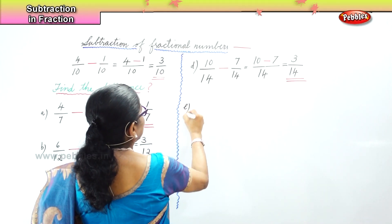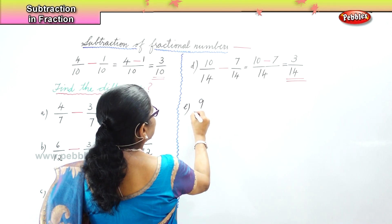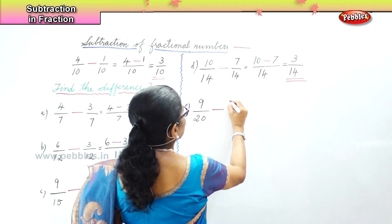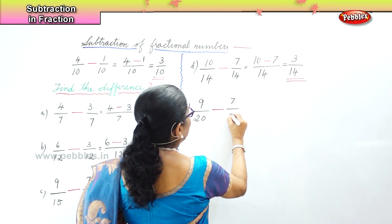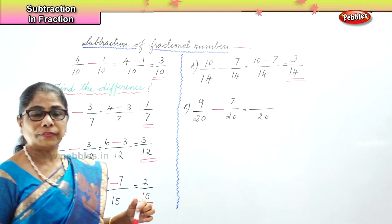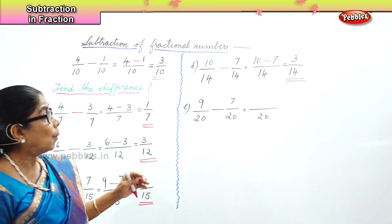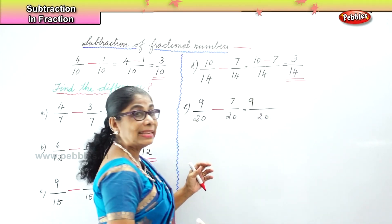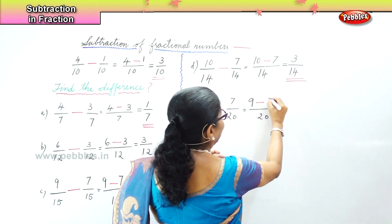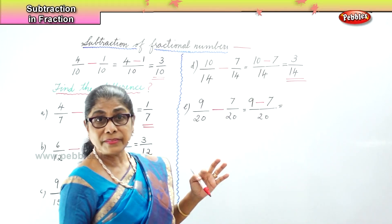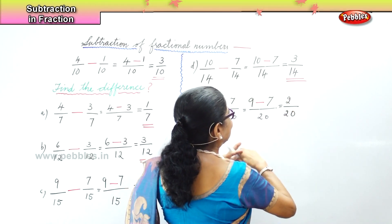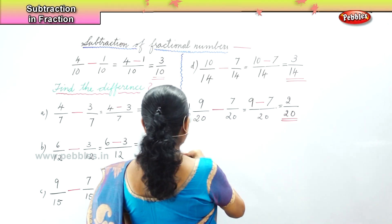Now another sum: we have 9 by 20 minus 7 by 20. Our denominator is 20 in both fractional numbers. The numerator: 9 minus 7 is 2, and our denominator is 20. So 2 by 20 — that gives us our answer.